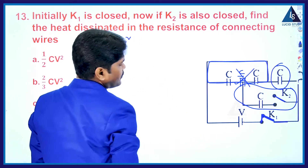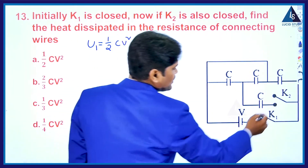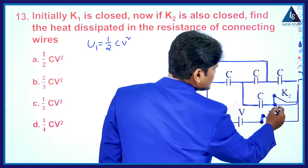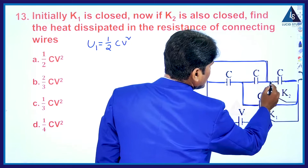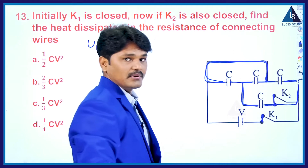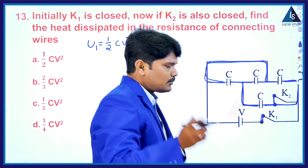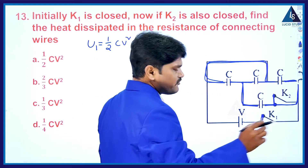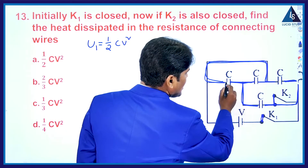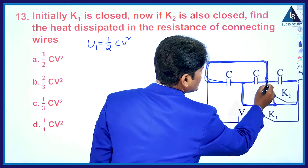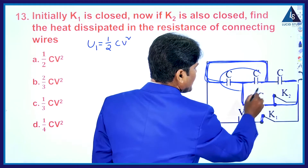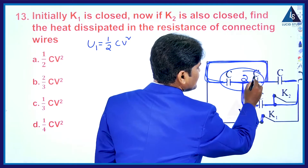Now if k2 is also closed along with k1, the entire circuit will be in connection and all capacitors will be in connection. Observing carefully, the similar sides of two capacitors are connected together here, and similarly for the other two capacitors — that means these two are in parallel, giving an effective capacitance of 2C.